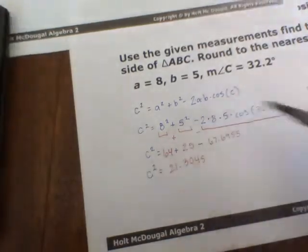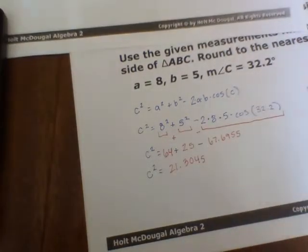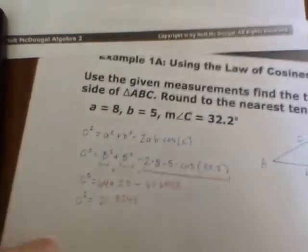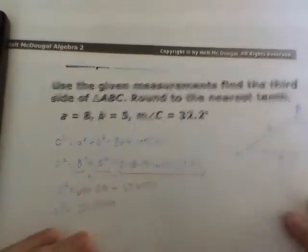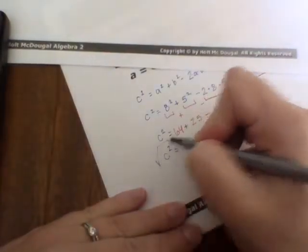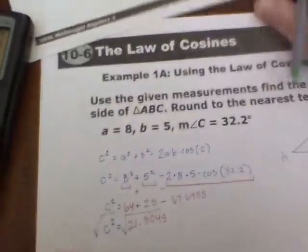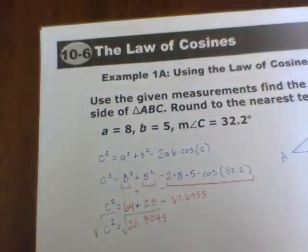Notice that that equals C squared, and so we're not actually done with finding the length of the third side until we take the square root of both of these pieces. So if we take the square root of 21.30,